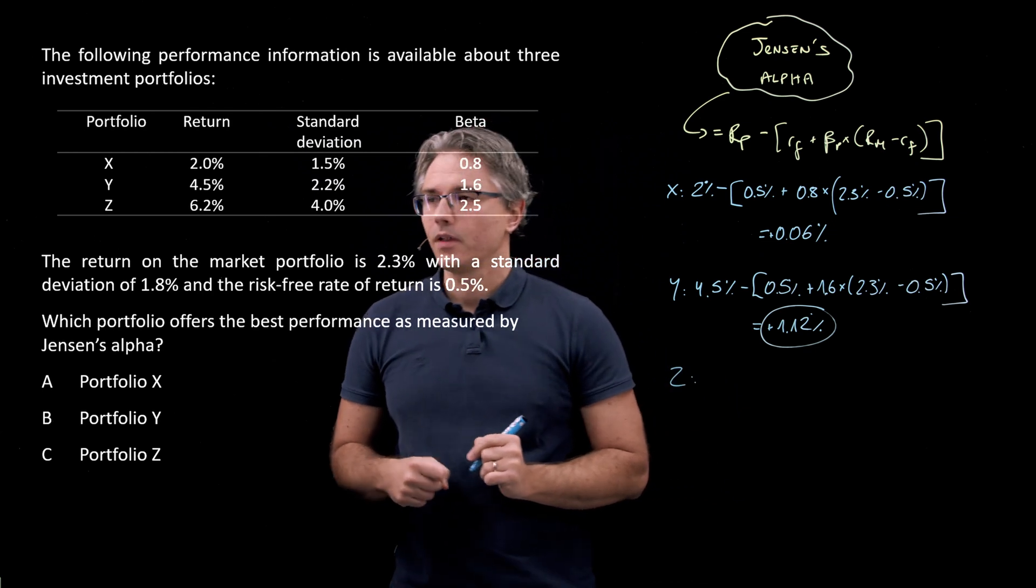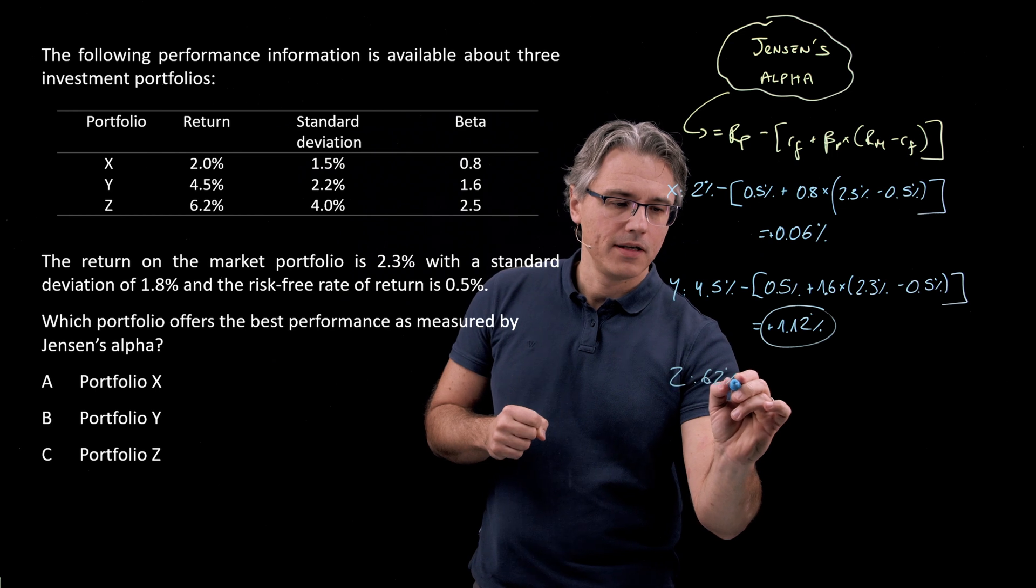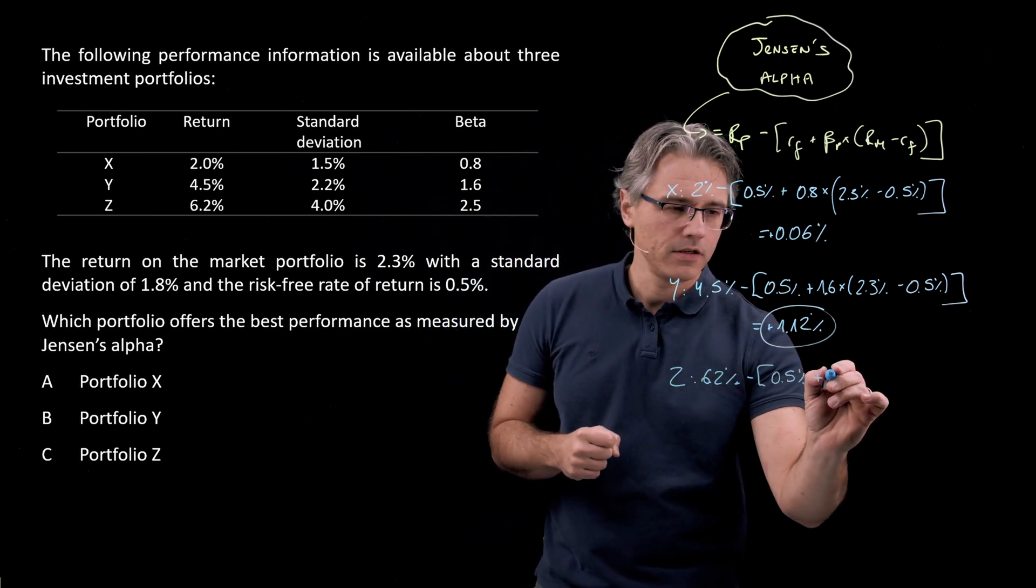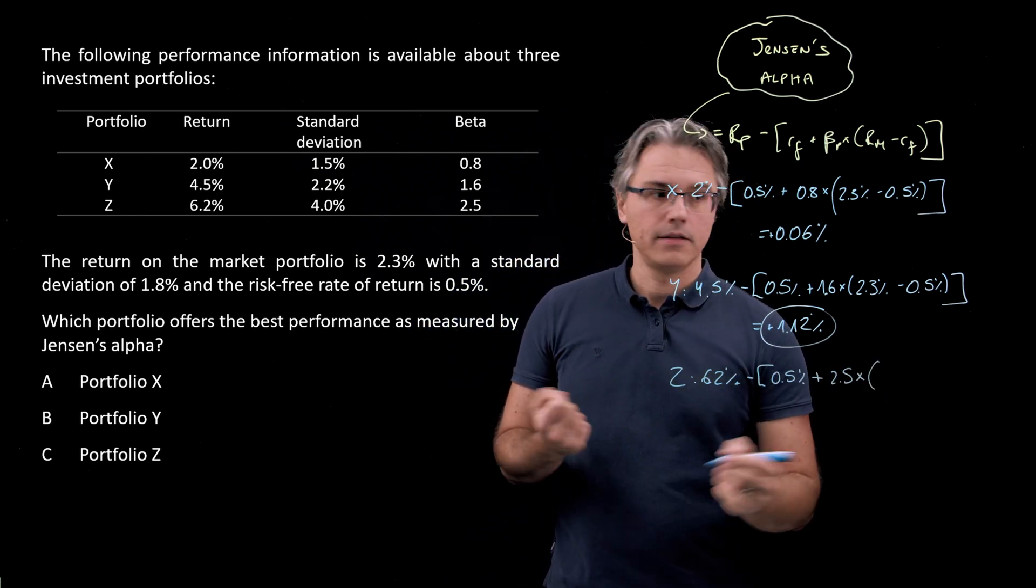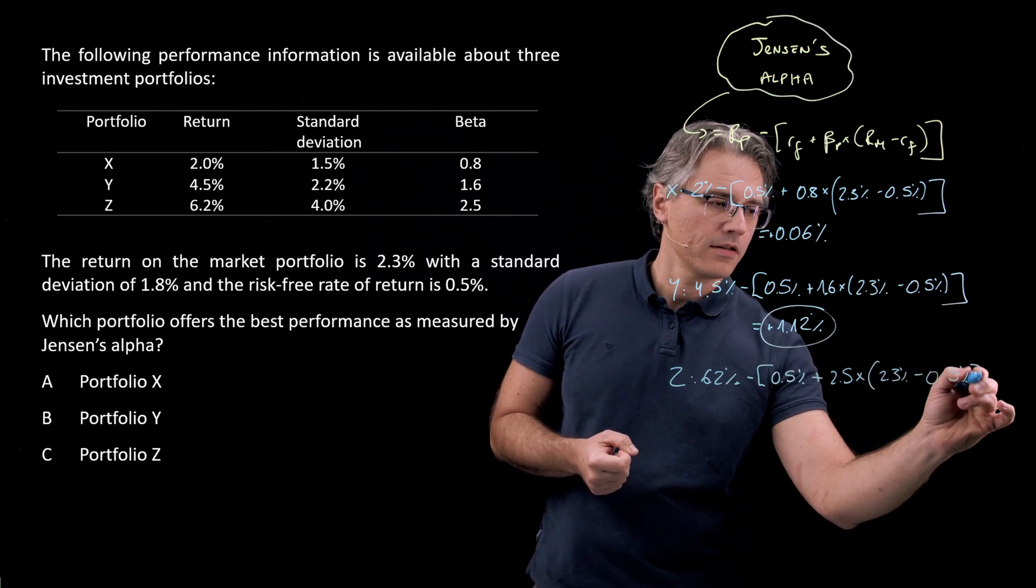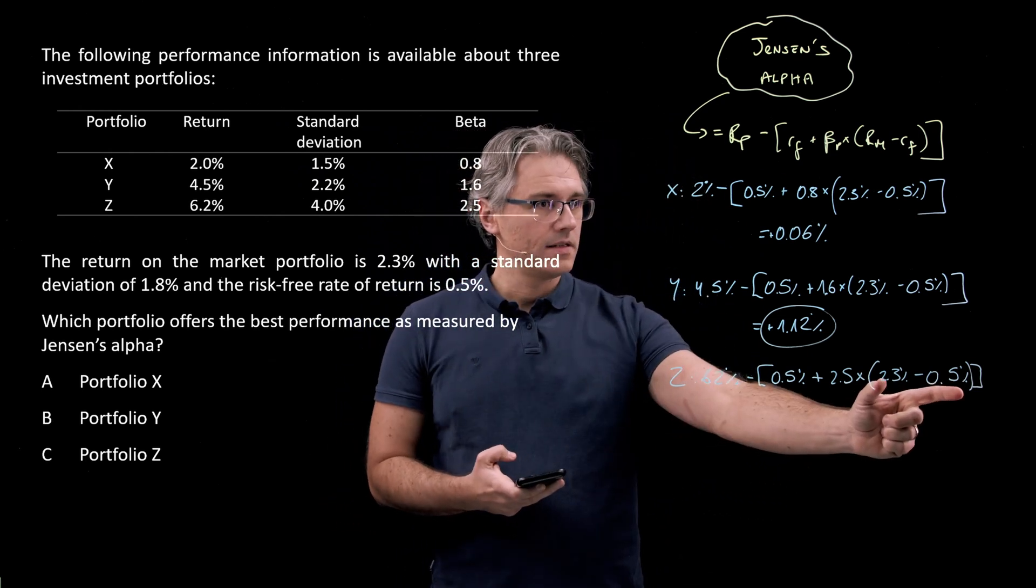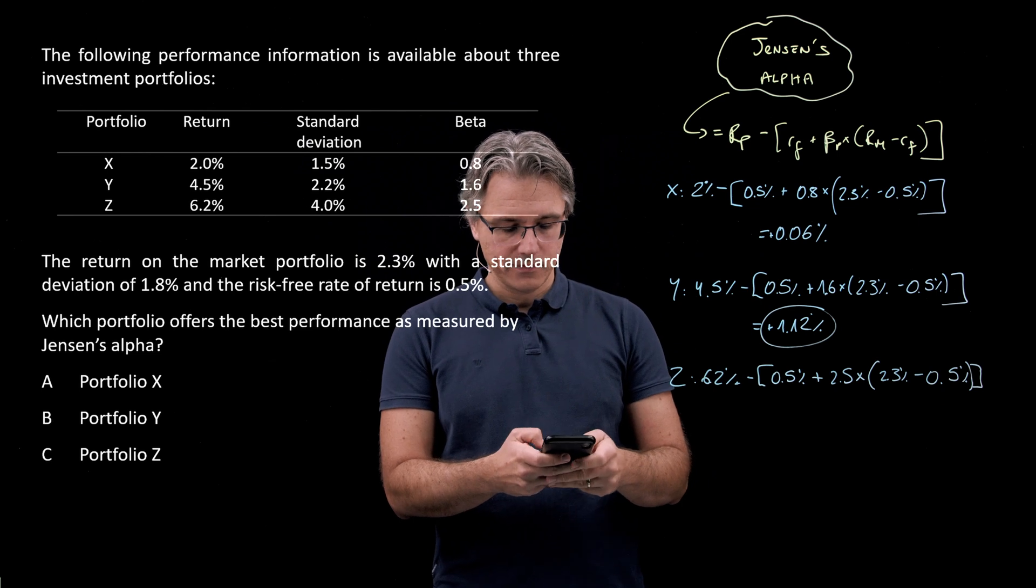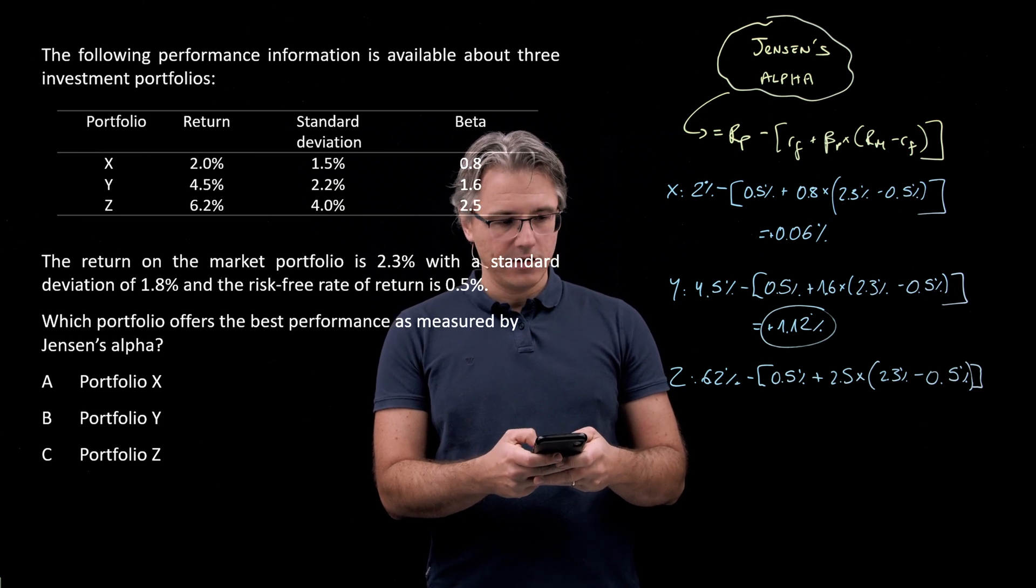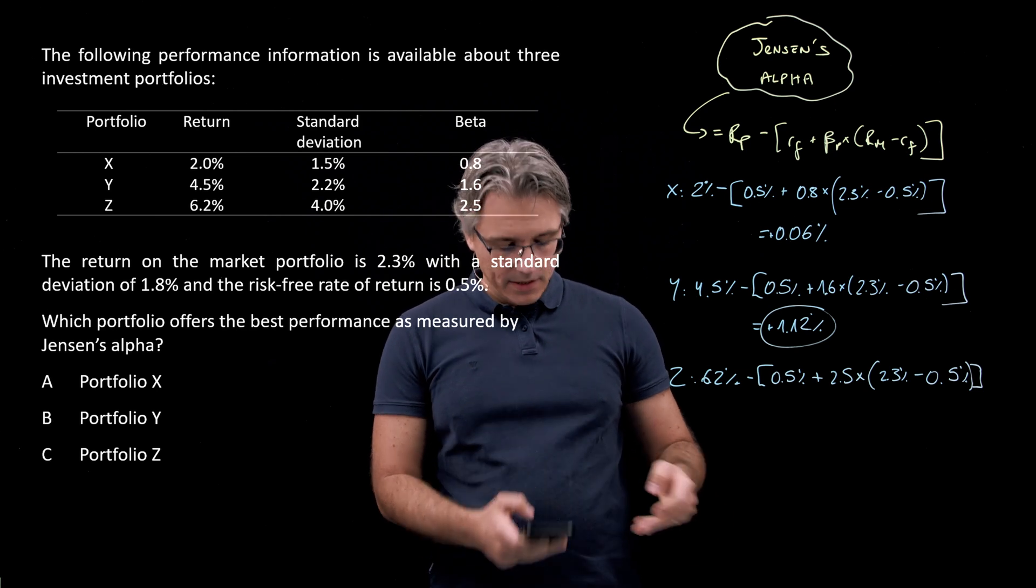Now, what about Zed? For portfolio Zed, we've got 6.2%. Once again, minus square brackets, 0.5% plus a beta of 2.5, and same thing as before in the bracket, 2.3 minus 0.5%, close both brackets. So this is 1.8 multiplied by a beta of 2.5 plus 0.5. Minus.